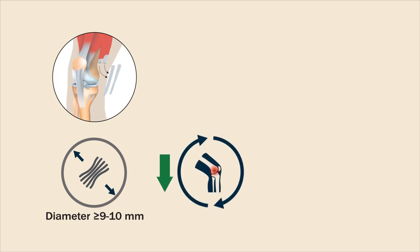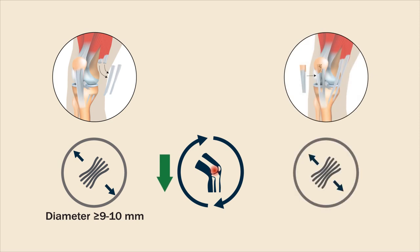treatment with a large hamstring tendon autograft of diameter greater than or equal to 9 or 10 mm reduced the risk of ACL revision, compared with treatment with a patellar tendon autograft of any size.